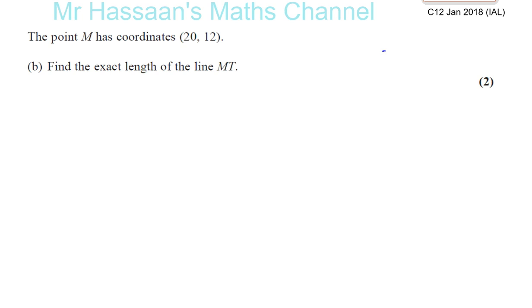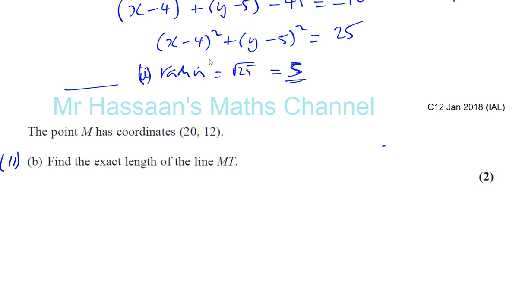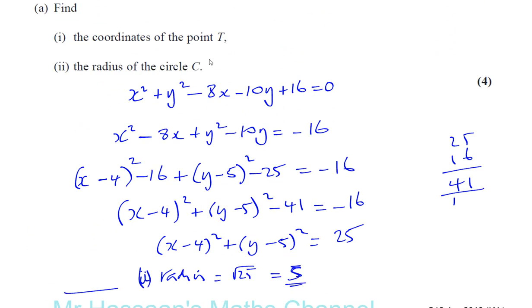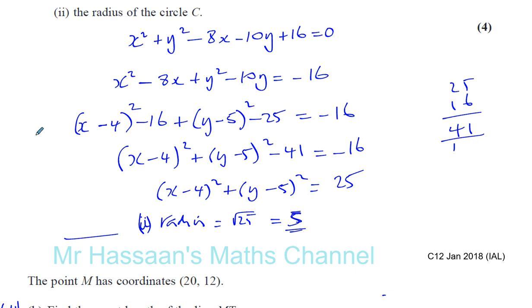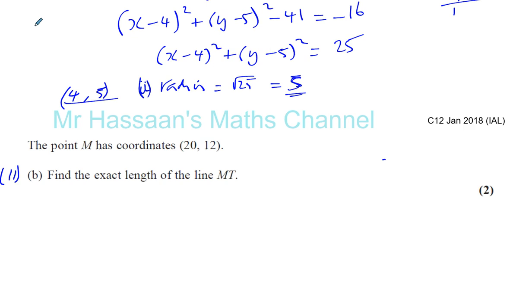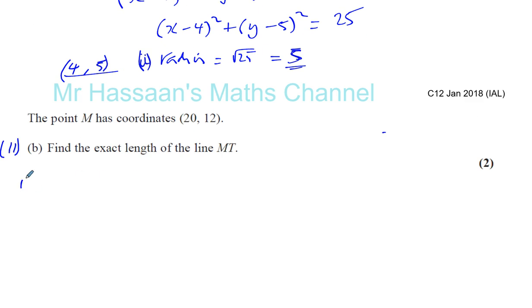Now we have question 11 part B of January 2018 IAL. They said the point M has coordinates 20, 12 — find the exact length of the line MT. For those of you who didn't see part 1, we found the coordinates of the point T at the end: they were 4 and 5. So M has coordinates 20, 12 and T has coordinates 4, 5. They want us to find the exact length of the line MT.